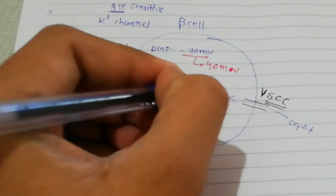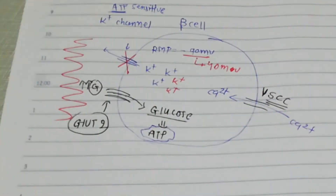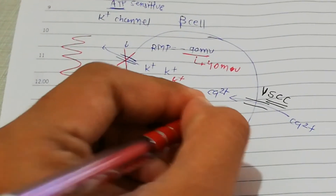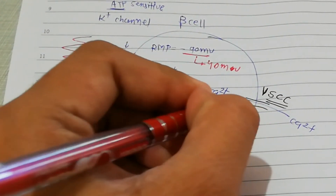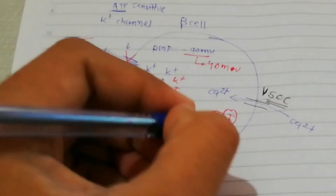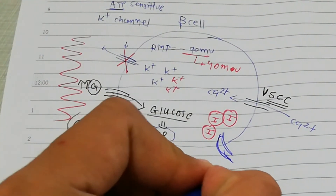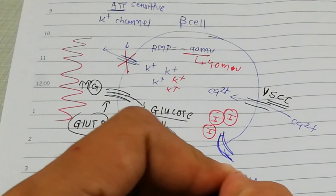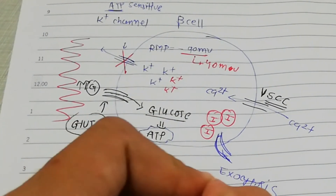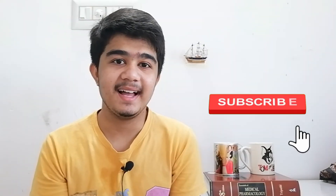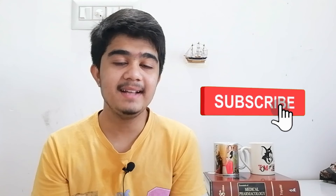The Ca2+ ions go inside the cell, and in the presence of calcium, the stored insulin — which is stored here in granules — is released via exocytosis. That is the whole mechanism behind insulin secretion.